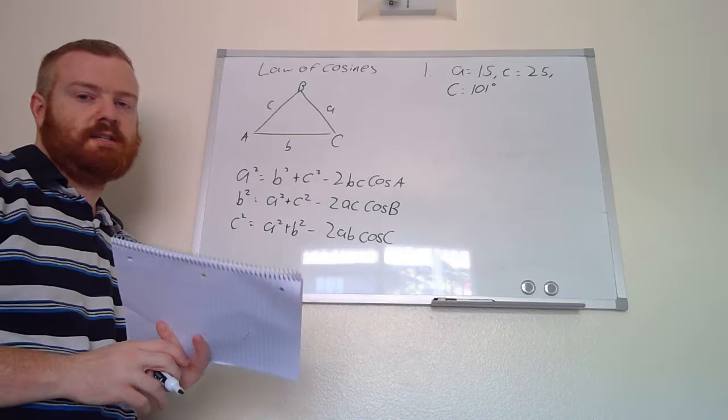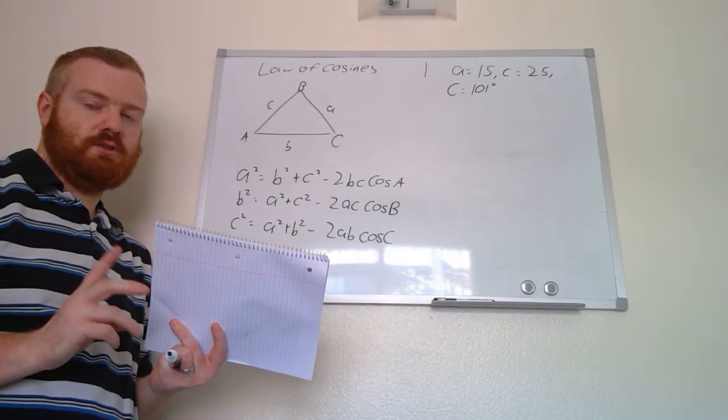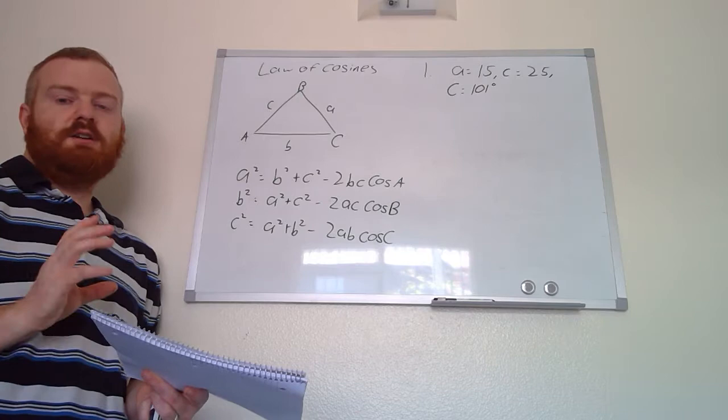This next section is also on solving triangles, using a different formula called the Law of Cosines. The Law of Sines, as we discovered last time, is something you can use to solve a triangle when you either have two sides and an angle, or two angles and a side, but you have to have a pair where you have an angle and its corresponding side length.